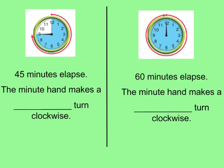Now let's do the same thing with this clock going clockwise. 45 minutes has elapsed — counting the five-minute marks gives us 5, 10, 15, 20, 25, 30, 35, 40, 45. The minutes hand has 9 twelfths shaded in. Dividing numerator and denominator by the greatest common factor of 3 gives us three-fourths. This clock has made a three-fourths turn clockwise. Dividing into four equal parts confirms three of the four parts are shaded equally.